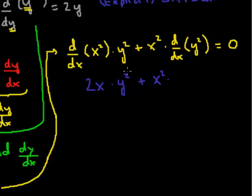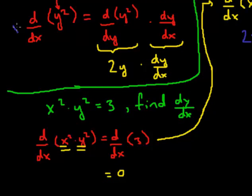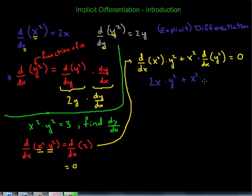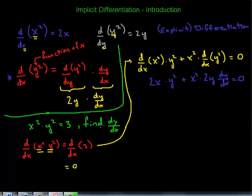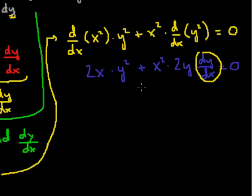This goes back to our implicit differentiation. The derivative of y squared with respect to x is 2y times dy/dx — and that was the chain rule. So the full expression is 2x times y squared plus x squared times 2y times dy/dx equals 0. Now, remember we're asked to find dy/dx, so we need to isolate dy/dx using algebra.